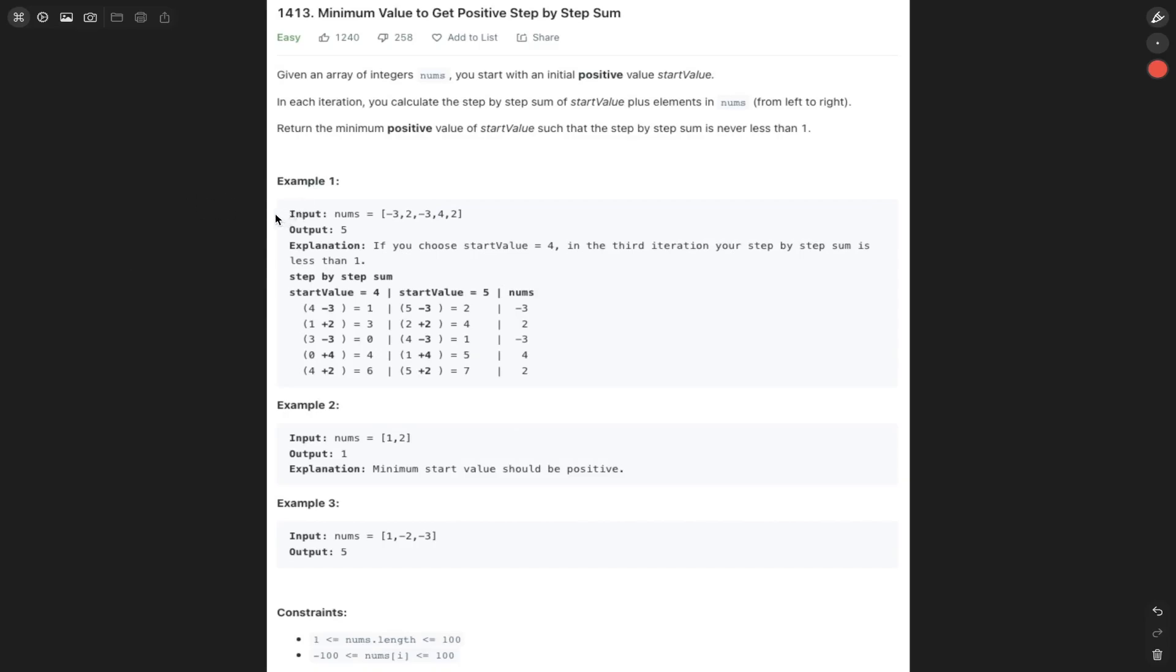Welcome back to Agro.js. Today's question is LeetCode 1413, Minimum Value to Get Positive Step by Step Sum. We're given an array of integers nums. We start with an initial positive value startValue. In each iteration, you calculate the step-by-step sum of startValue plus elements in nums from left to right. Return the minimum positive value of startValue such that the step-by-step sum is never less than one.